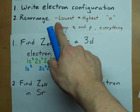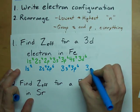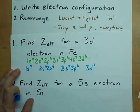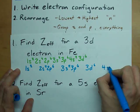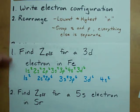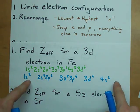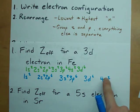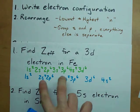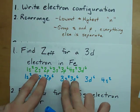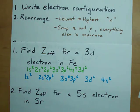Remember, we're going from lowest to highest n. So 3d6 comes next and 4s2. Okay, so everything's separate. It goes from lowest to highest n and only the s's and p's with the same n's are grouped.